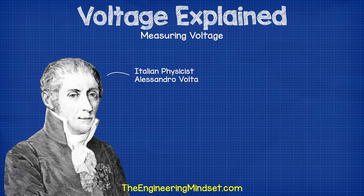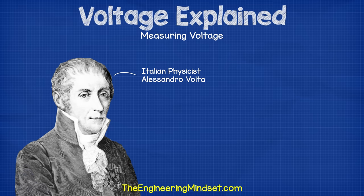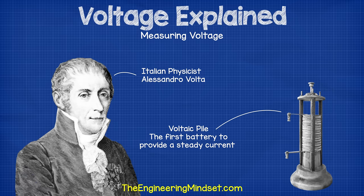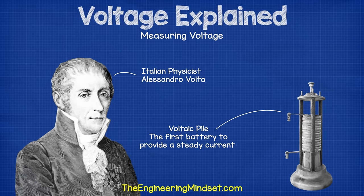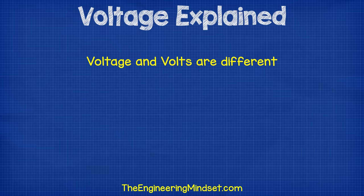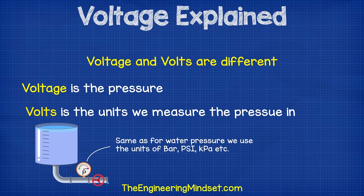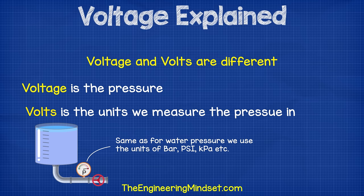The term volt comes from an Italian physicist named Alessandro Volta, who invented the voltaic pile, which was the first electrical battery that could provide an electrical current at a steady rate in a circuit. Voltage and volts are different. Remember, voltage is the pressure, and volts is just the units we use to measure it in. The same as we know the pipe has pressure, but we use units to measure this pressure, such as bar, PSI, KPA, et cetera.